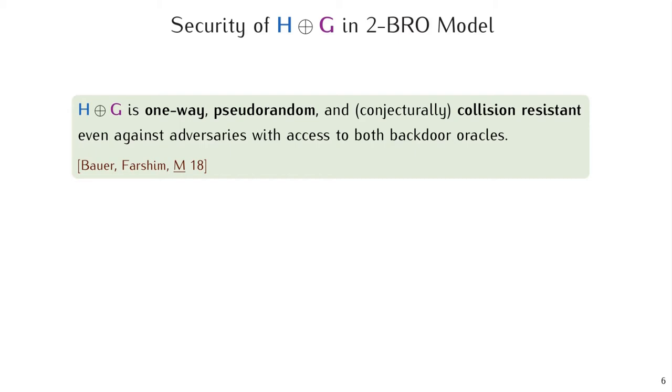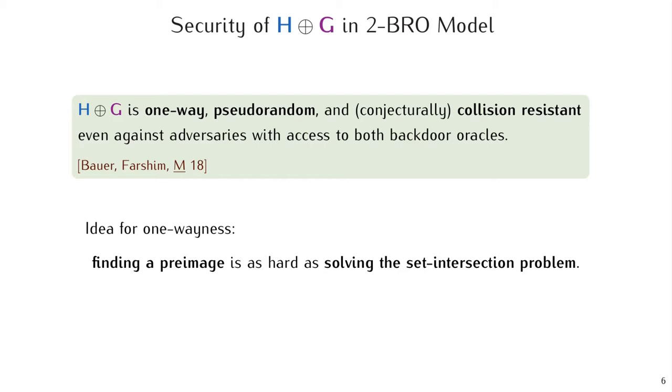Just to give you an idea about their proofs, for one-wayness it turns out that finding a preimage under the combiner is as hard as solving the set intersection problem. We know that the set intersection problem is hard, meaning that it has a high communication complexity for large random sets. So, we obtain that the XOR combiner is one-way.